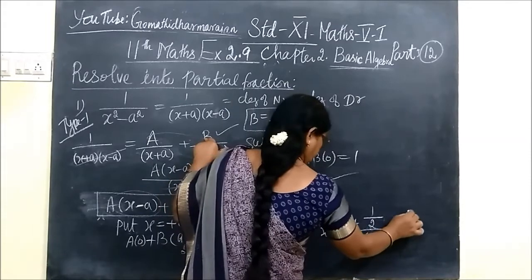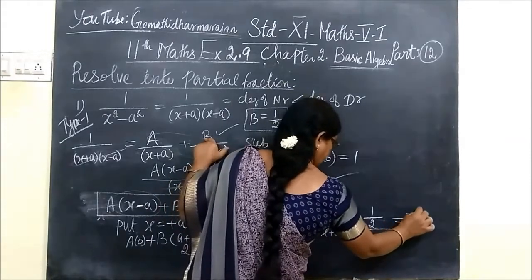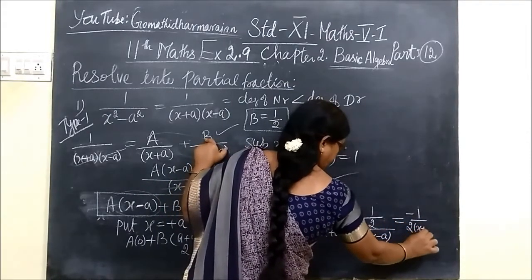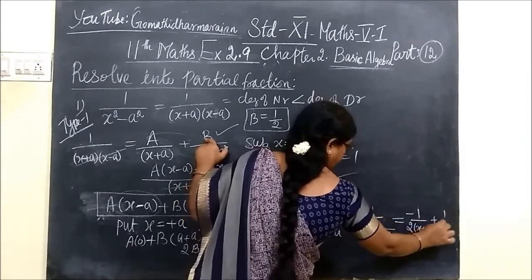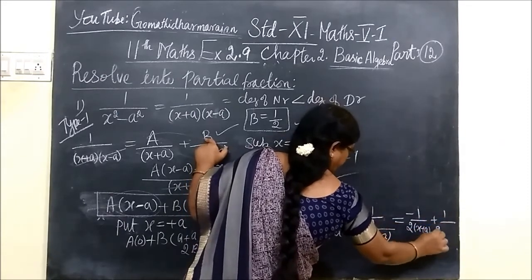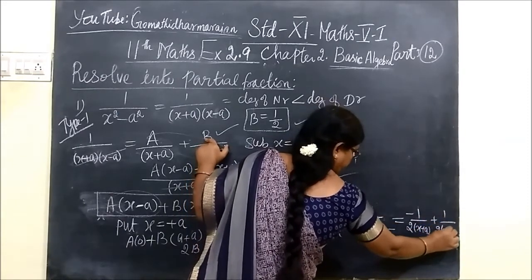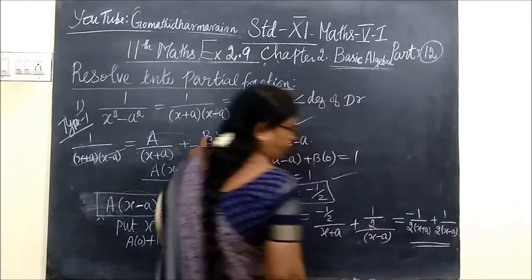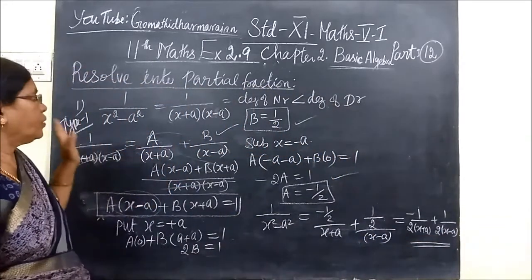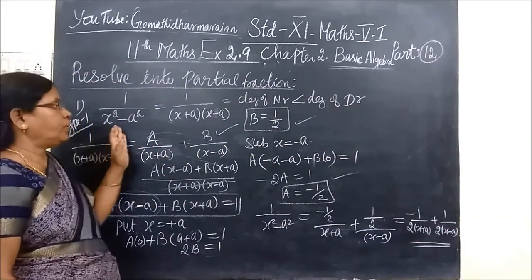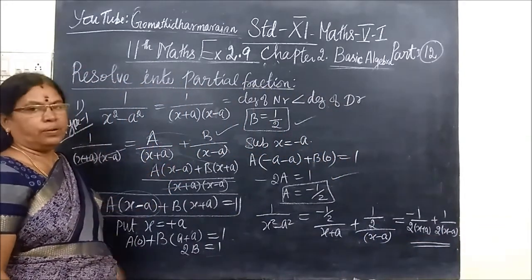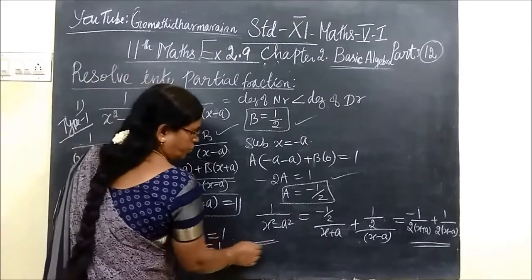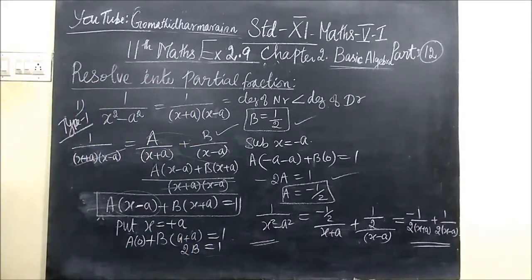So this is equal to minus 1 by 2 bracket S plus A, plus 1 by 2 bracket S minus A. So in this way we resolve into partial fractions. And we do that one more time with the next question.